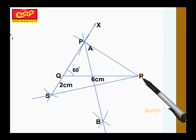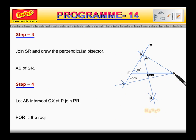Now see the picture very carefully. PQR is a required triangle.